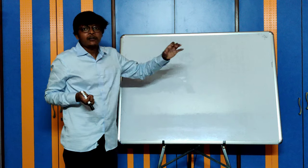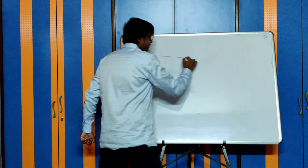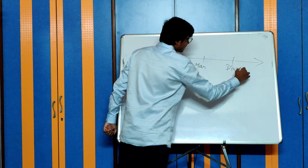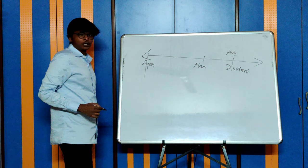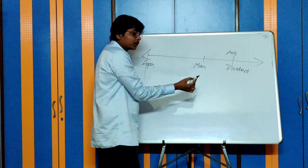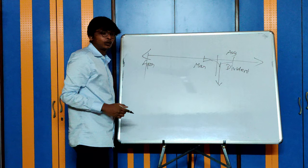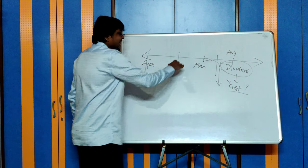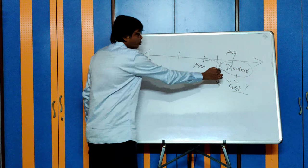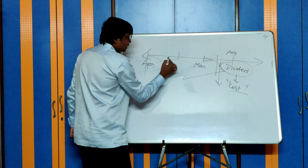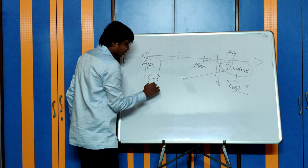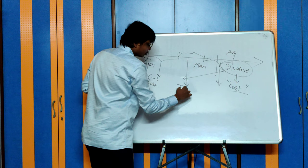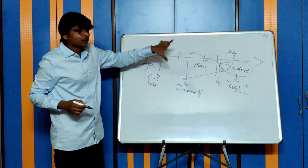What happens if somebody becomes an investor in the middle of the year — say October, after 6 months? When purchasing the share mid-year, the second half of the year's dividend profits belong to him, and the first half does not. When he receives dividend, he will split it on a time basis — say 6 months each. The 50% for the period where he was not the shareholder will be credited to the investment account, and for the period where he is the shareholder, it will be credited to his dividend income account, which will be transferred to profit and loss. This is the accounting for variable income securities.